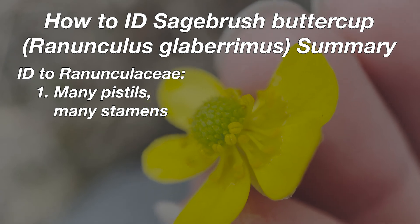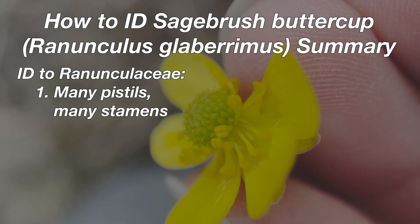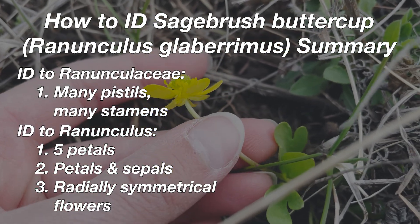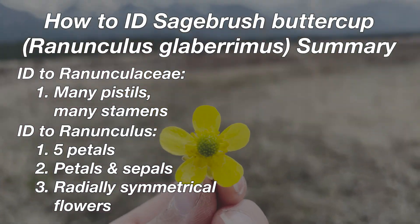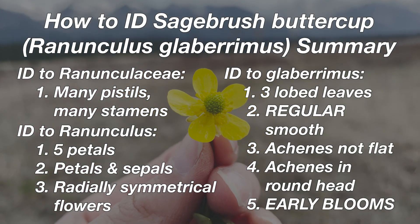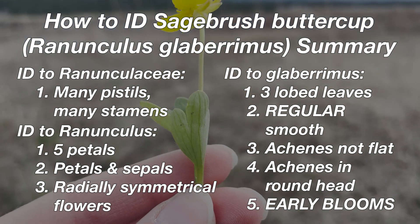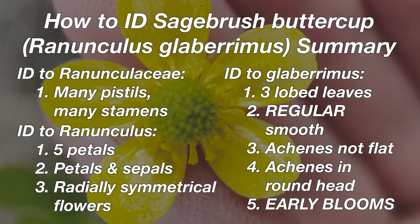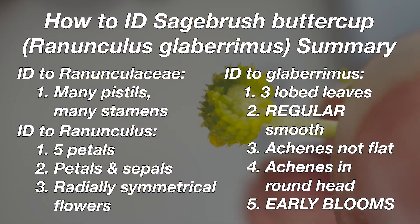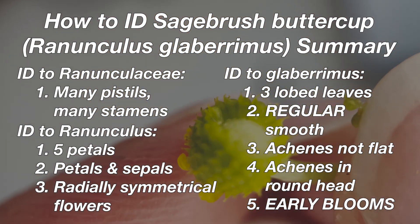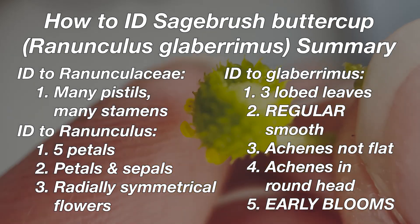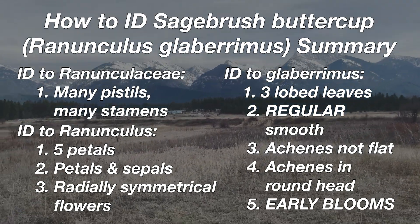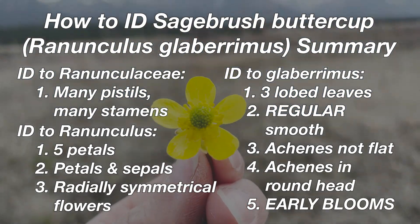Just to sum up: if you see a ton of pistils and stamens, you're probably working with something in the family Ranunculaceae. To get into the genus Ranunculus, look for five petals, a layer of both petals and sepals, and radially symmetrical flowers. To get to sagebrush buttercup specifically, look at the leaves, which have three deep lobes and are very smooth, or look at the achenes, which are only slightly flattened and arranged in a rounded, not cone-shaped, head. But probably your biggest clue is the timing — if it's early spring and this is the only wildflower you're seeing, it's almost certainly a sagebrush buttercup.